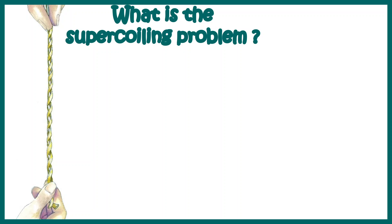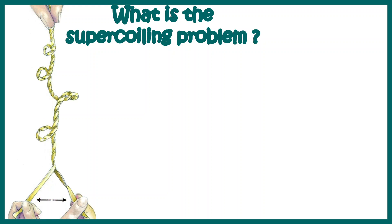DNA undergoes a lot of problems, one of them being a supercoiling problem. Let's try to understand that by using a thread analogy. These two threads are entangled with each other, and if you try to relieve this strain by separating each of the strands from the end, after a certain point you would see the strands getting more entangled and accumulating more torsional stress. This is how we can understand the supercoiling problem, which DNA faces all the time inside the nucleus where it has to be packed into a defined volume.